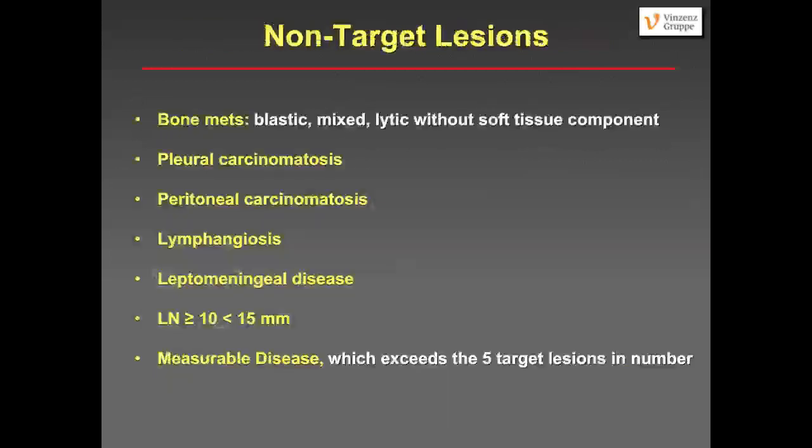Non-target lesions in general include: bone metastases (osteoblastic, mixed lesions, and lytic lesions without soft tissue component), pleural carcinomatosis, peritoneal carcinomatosis, lymphangiosis in the lung, leptomeningeal disease, lymph nodes at least 10 mm and smaller than 15 mm, and measurable disease which exceeds the number of five target lesions. You could include these lesions as non-target lesions if you wish and think they are representative. But no more than five target lesions in total.